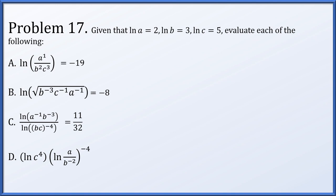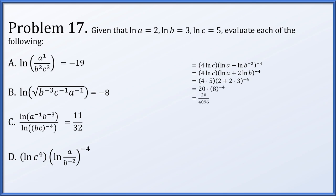For part d, we have the natural log of c to the fourth times the natural log of a over b to the minus 2, all raised to the minus 4 power. We bring the power of 4 out from ln c to the fourth as a scalar multiple. For the right term, we replace the log of a divided by b to the minus 2 as ln a minus ln b to the minus 2, then bring that exponent out as a scalar. Substituting known values, the parenthetical 2 plus 2 times 3 raised to the minus 4 gives us 20 over 4096, which simplifies to 5 over 1024.